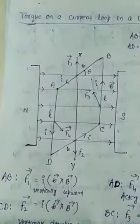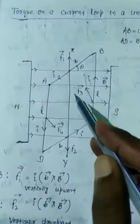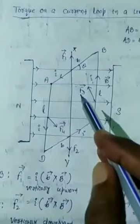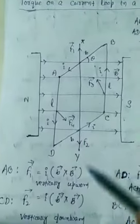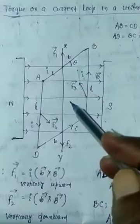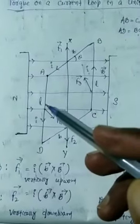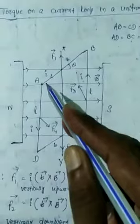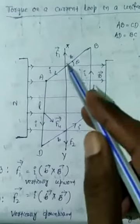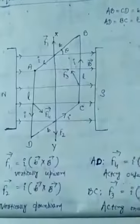A coil of any shape experiences a torque when it is placed in a uniform magnetic field, and the torque rotates the coil until the plane of the coil is at right angle to the magnetic field. The coil rotates inside the magnetic field until the plane of the coil is perpendicular to the magnetic field.